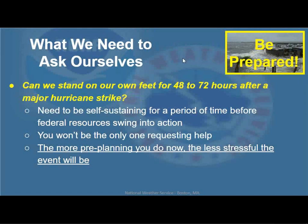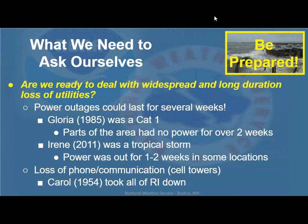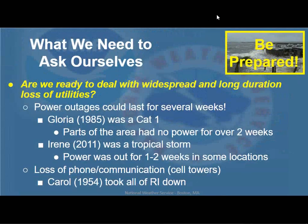Are you ready to deal with widespread and long-duration loss of utilities? Power outages could last for several weeks. Gloria in 1985 was a Category 1 hurricane, and parts of the area had no power for over two weeks. Irene was a tropical storm with 60 mile per hour winds, and power was out for one to two weeks in some locations. Think about what a strong Category 1, Category 2, or Category 3 hurricane could do in our area — we have a lot more foliage and tree coverage.